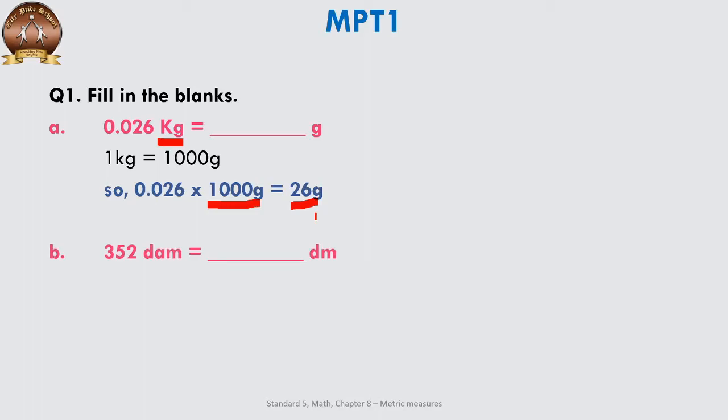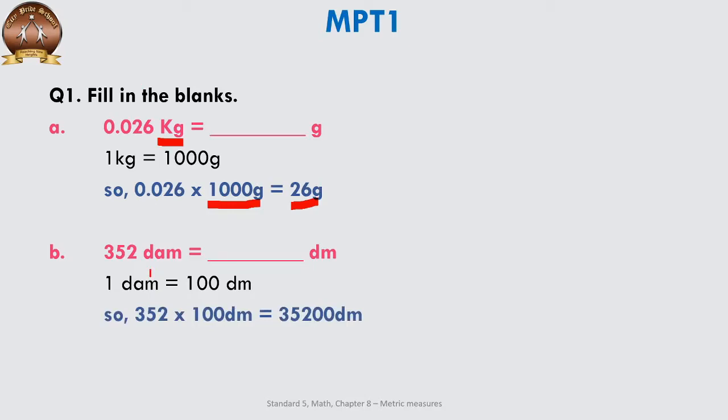Next: 352 decameters equals how many decimeters? Looking at King Henry Died Uncertainly Drinking Chocolate Milk — Died is deca and Drinking is deci. So again we are converting a bigger unit to a smaller unit: 1 decameter is equal to 100 decimeters. Multiply, remove the dam, put 100 dm, and you get the answer in decimeters.